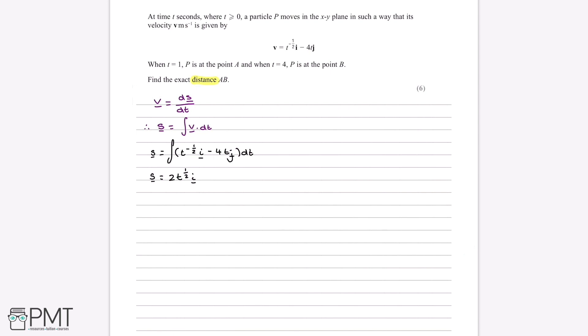So now if we do the same thing with minus 4tj, we add 1 to the power, we have t squared, and divide minus 4 by 2, we get minus 2t squared j. And then because this is indefinite integration, we need to add a c, which is a vector in this case, so it has an i component and a j component, we just don't know what it is.